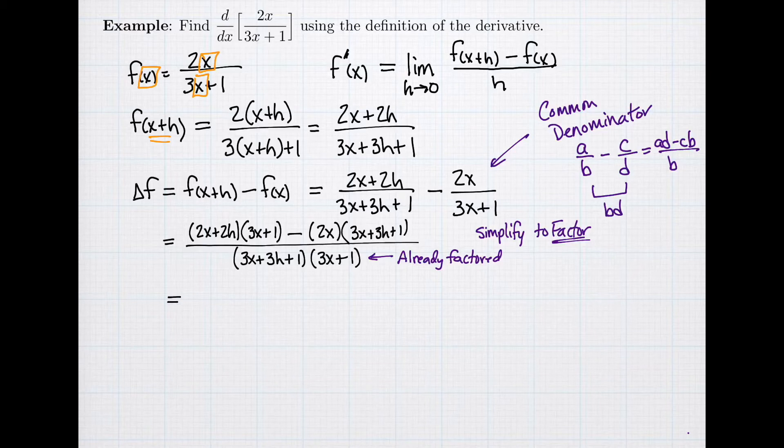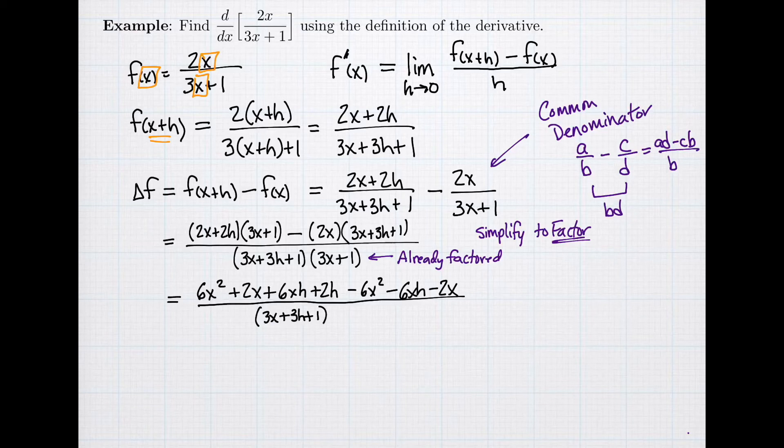So let's simplify the top, and I need to multiply out my terms. I do that with FOIL. 2x times 3x gives me 6x squared. My outside terms gives me plus 2x. Inside terms gives me 6xh. And my last terms gives me 2h. And then I'm going to subtract. And this 2x has to distribute to every term. So I get minus 6x squared minus 6xh and minus 2x. And then I'll divide all of this by that denominator, 3x, 3h plus 1 times 3x plus 1.